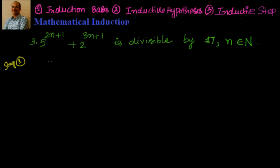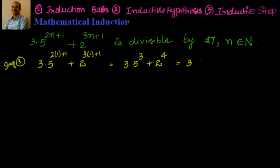Step 1: we substitute n equal to 1 into the expression. It becomes 3 into 5 to the power of 3 plus 2 to the power of 4. Simplifying, 3 into 125 is 375, plus 16 is 391, which is a multiple of 17 because 17 into 23 equals 391. So we have proved step 1.